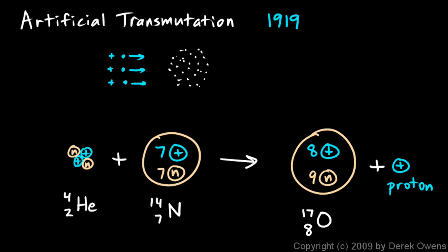So the alpha particle, which is the helium nucleus, plus the nitrogen, results in oxygen plus a proton. So he was able to change the nitrogen into oxygen through this nuclear process, and that's transmutation, changing one element into another.